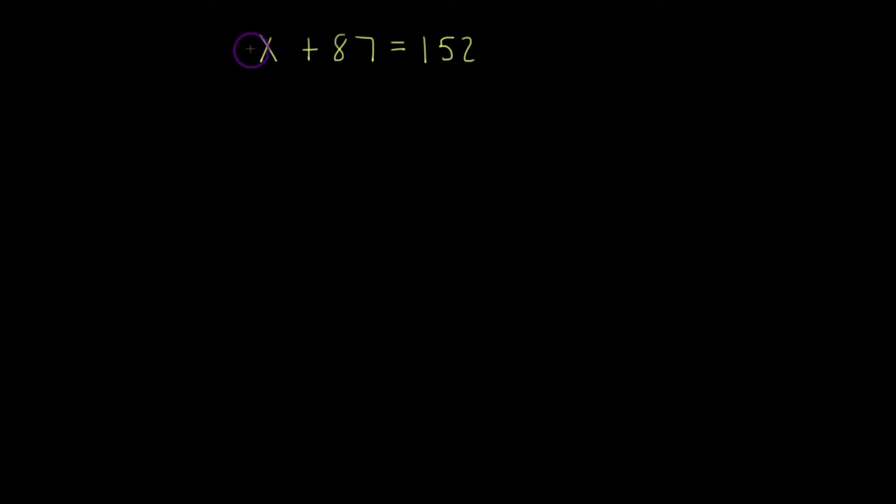Now I can guess and check and try to figure out what this number is, or I can use another method. I can isolate the variable. So that's my overall goal. I want to get this variable alone on an island by itself in isolation. So we're going to isolate the variable.